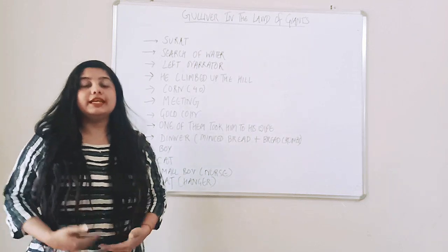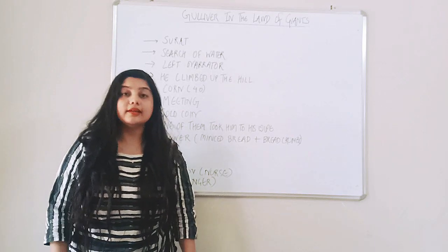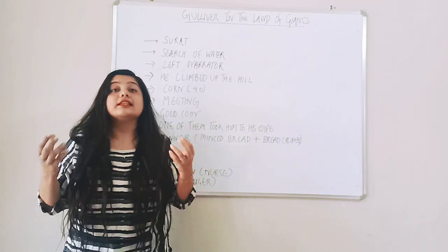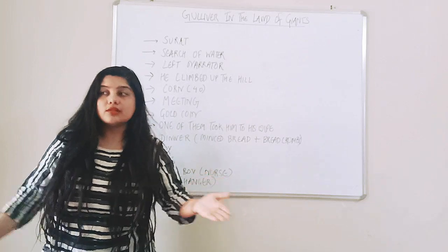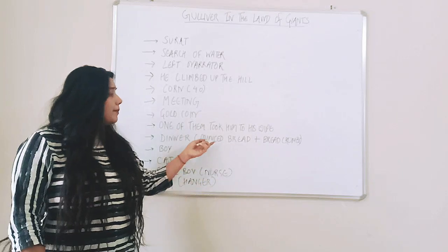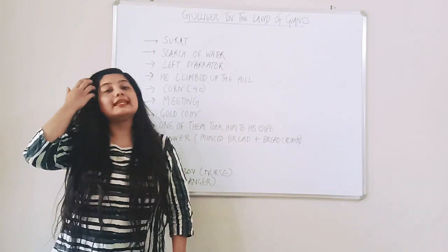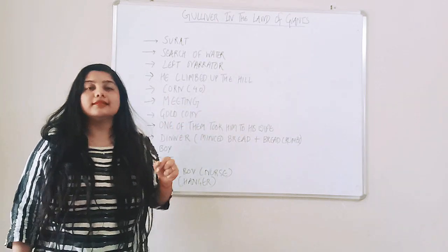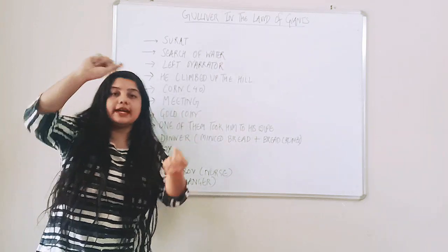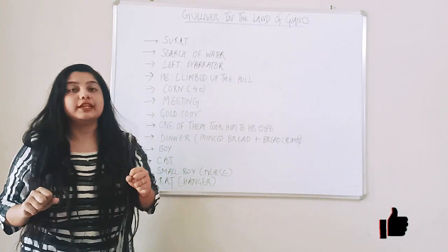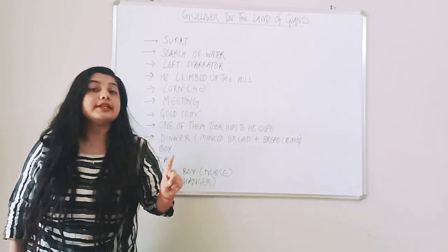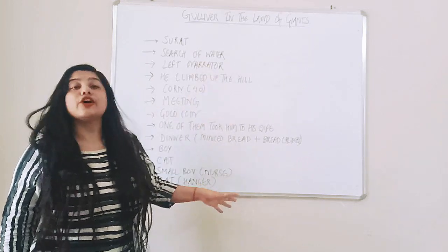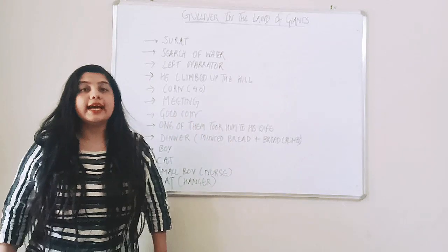The family welcomes Gulliver and does not harm him. They invite him to dinner. The wife serves minced bread and breadcrumbs — and even the dinner is enormous. Imagine, our chapati is small but for a giant it would be huge. The giant family also has a young son, who tries to irritate Gulliver — picking him up and turning him upside down. However, the mother steps in and saves Gulliver, telling the boy not to harm the small creature.